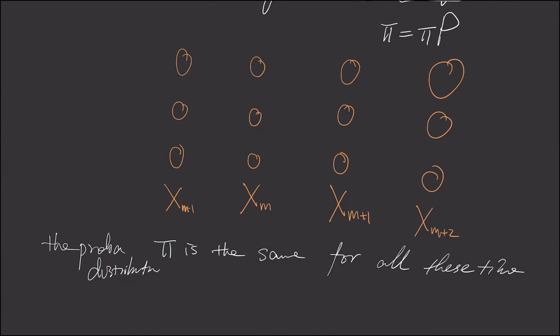For example, we can think of a sample path. This is state 0, this is state 1, and this is state 2.